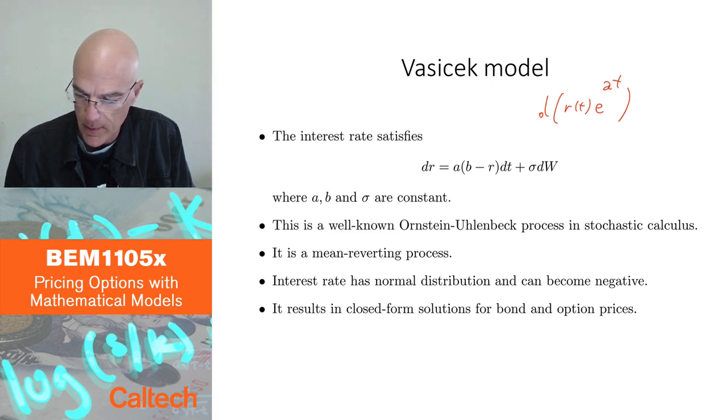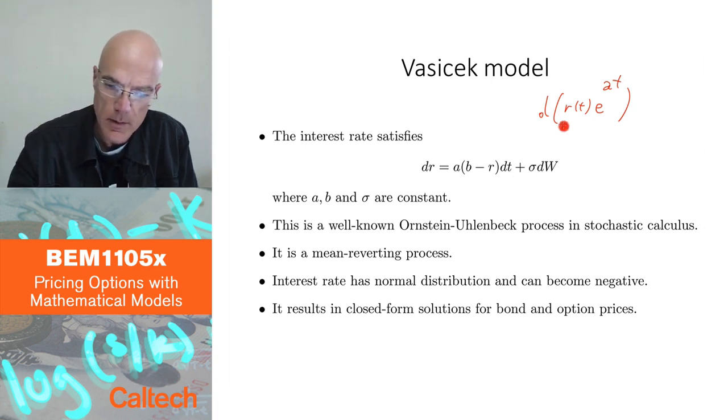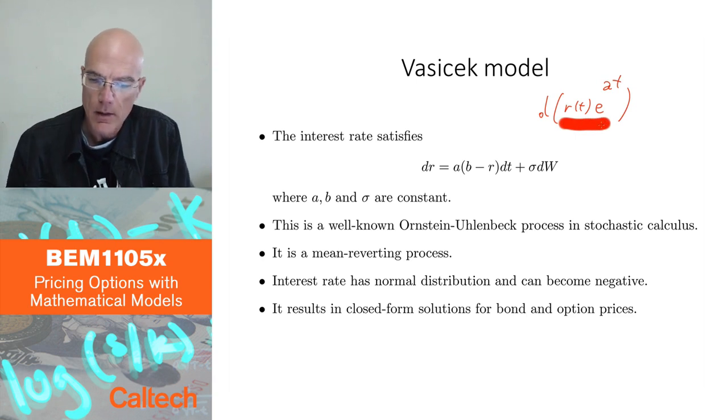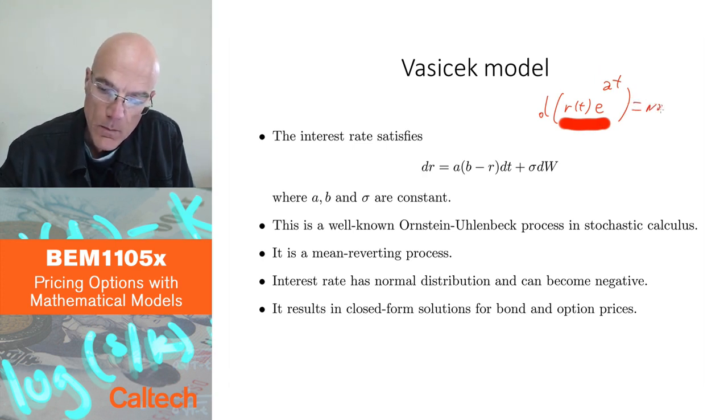So that way you can see that this product here, r times e^(at), is normally distributed, but then also, the r itself is normally distributed. So that has normal distribution. By doing Ito's rule on this, you can show that this has normal distribution, and therefore, r has normal distribution.